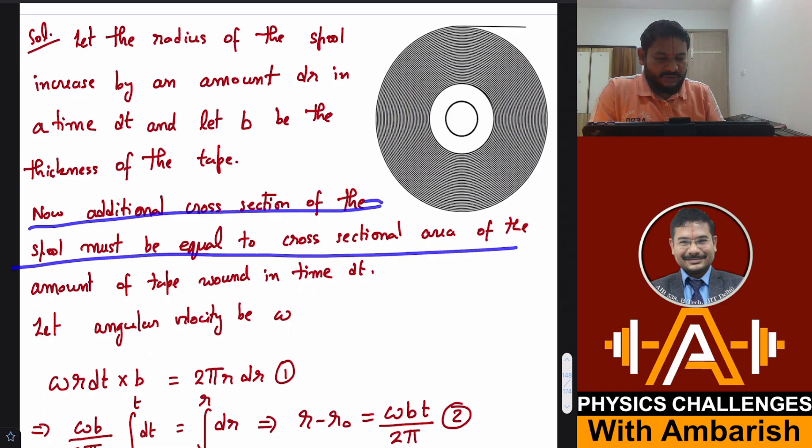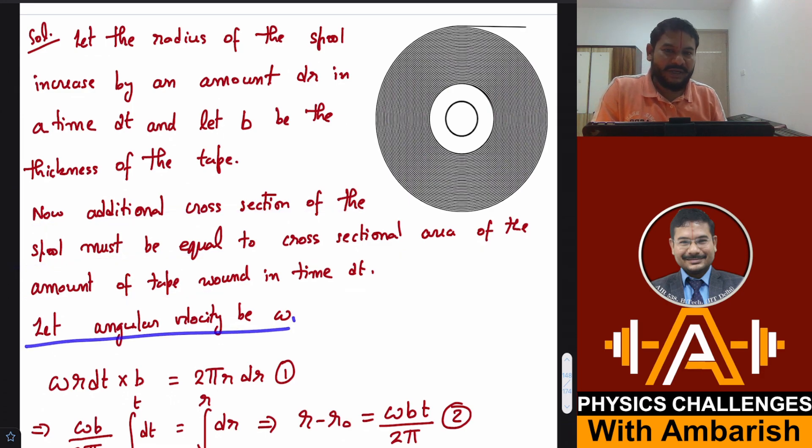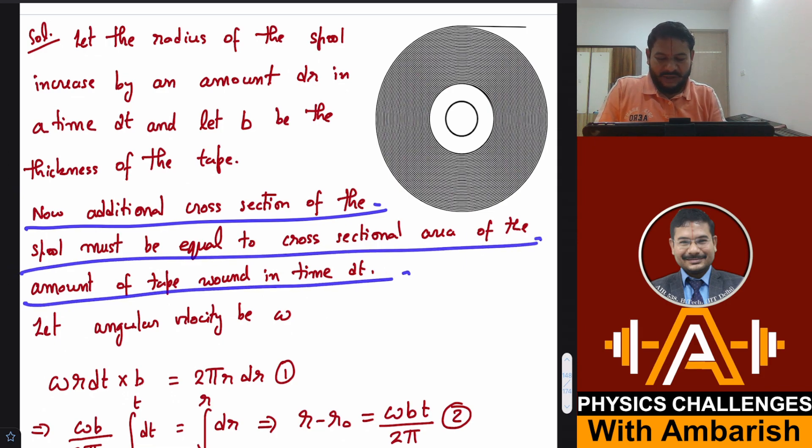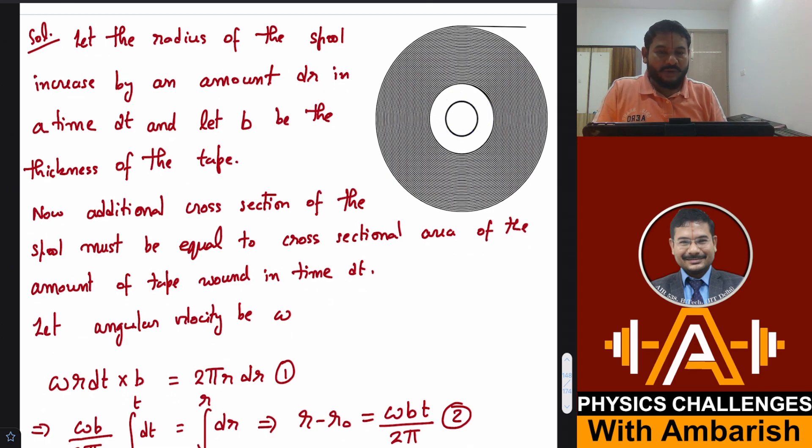Now the additional cross section of the spool must be equal to the cross section area of the amount of tape wound in time dt. In dt time some additional cross section has increased, and the amount of the tape which is wound in a circular fashion, when it was not wound would have looked like a straight line with some cross section area. The area along the straight line must equal the area along the curve because the cross section area will not change upon winding. Let the angular velocity be omega. The length wound in time dt is omega r dt times b, and this should also be equal to 2π r dr.